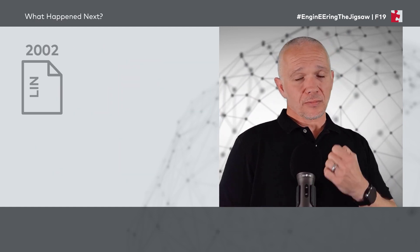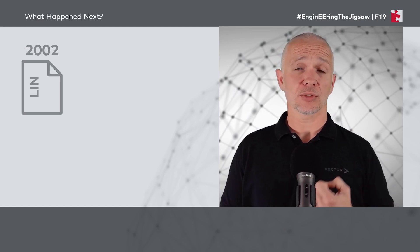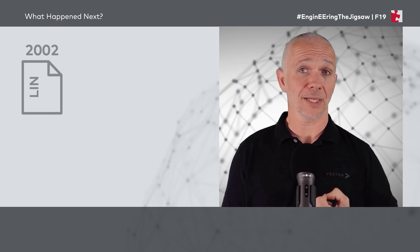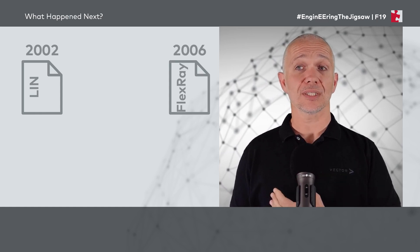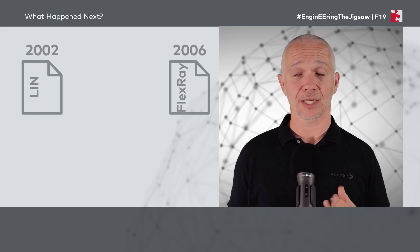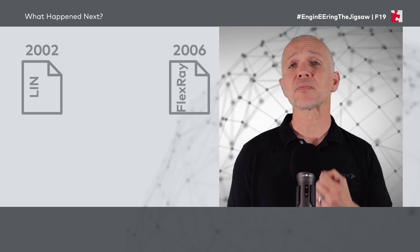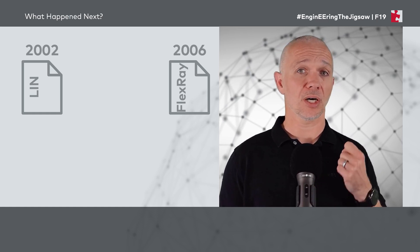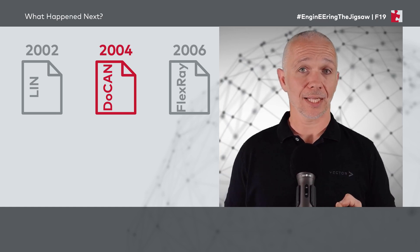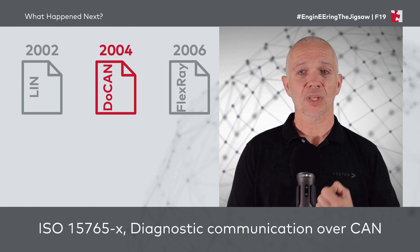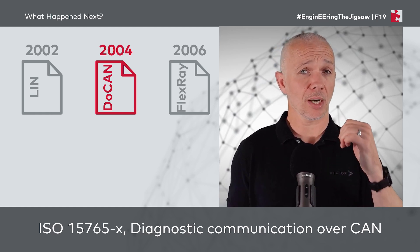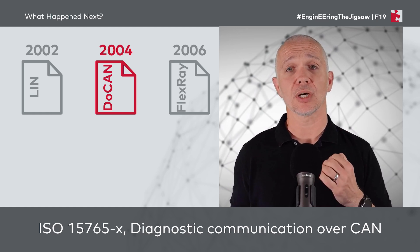Moving on to the early 2000s: in 2002, the initial specification of the Local Interconnect Network was published, and in 2006, FlexRay was published — both developed by consortia groups of companies. In 2004, there was a really important ISO specification published: DO-CAN, or Diagnostics Over CAN. The ISO standard for this is ISO 15765, with a number of parts covering diagnostic communication over CAN.